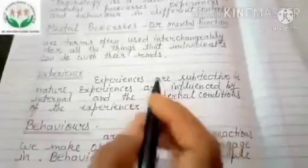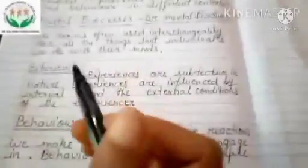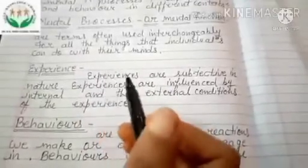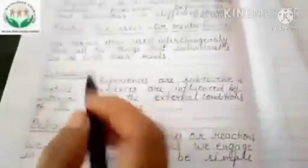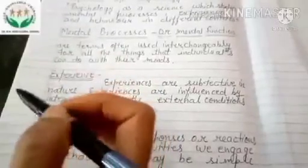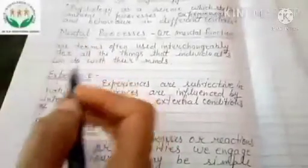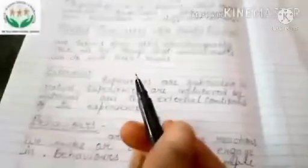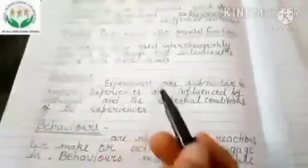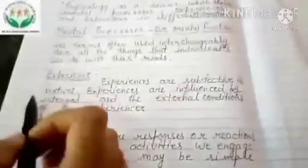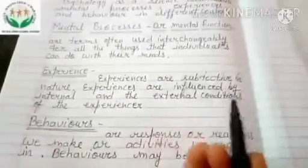Experience depends on the internal state of the experiencer. If a person is satisfied with his life, he can gain a good experience. But if he or she has a problem, his experience can also be poor. For example, students come to class to study, but if something bad happened at home that morning and our mood is off, even if the teacher teaches well, our experience of the class will not be good. That morning incident affected us internally and in turn affected our experience.